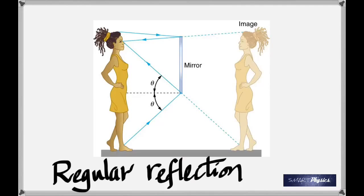What about the size? Same size. Is it upright or inverted? Upright. And the position? Same distance behind as the object is in front. D-O is called the object distance, measured from the reflecting surface; D-I is the image distance. D-O is equal to negative D-I — that is called the law of distances for a plane mirror. The negative shows that the image is formed as much behind as the object is in front.